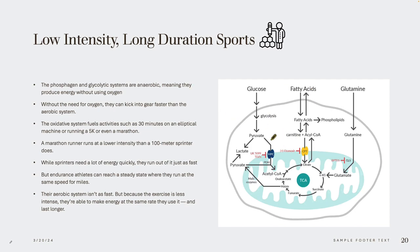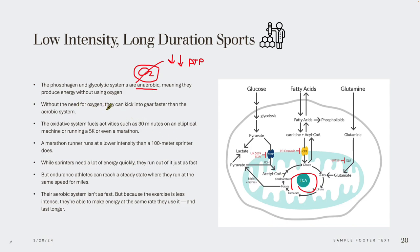Comparing this system to others: the phosphagen and glycolytic systems are anaerobic, meaning there is no oxygen. They produce very little ATP because they're not using the mitochondria with fatty acids and glucose to create a large amount of energy. Without the need for oxygen, they can kick into gear faster than the aerobic system — providing reserves for muscle contraction while we're waiting for oxygen to create higher levels of ATP.